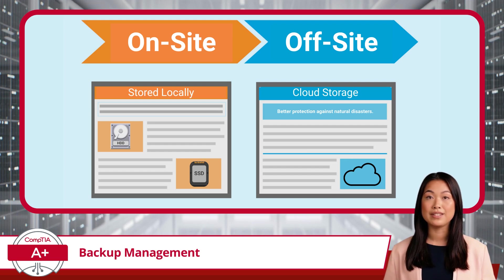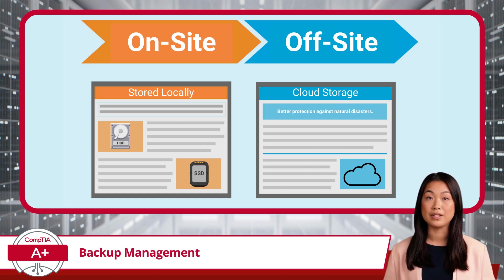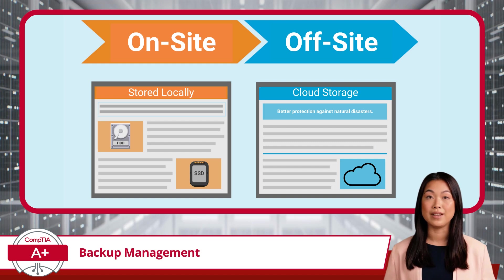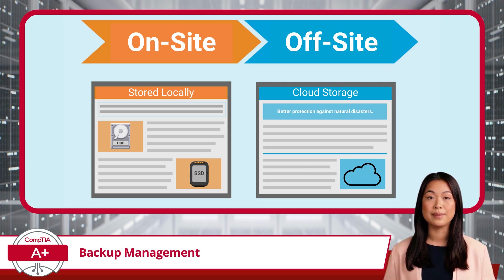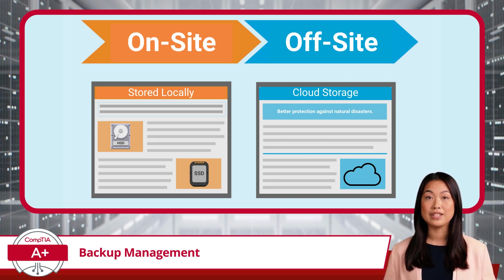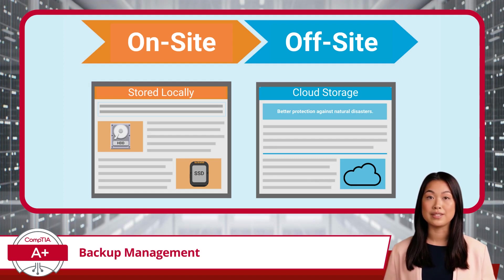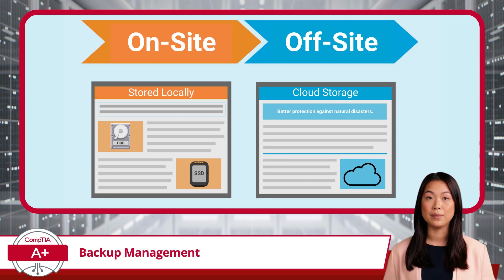Off-site backups, such as cloud storage, address many of these vulnerabilities. Cloud backups provide accessibility from virtually anywhere with an internet connection, scalability to meet your changing storage needs, and protection against localized disasters. However, they come with their own challenges. A stable internet connection is essential, and there are ongoing subscription costs to consider. While cloud providers prioritize security, no system is entirely immune to breaches, making it critical to choose a trusted provider. For the best protection, many organizations use a hybrid approach, combining on-site backups for quick recovery and off-site backups to safeguard against catastrophic events. This strategy ensures data is both accessible and secure, no matter what challenges arise.